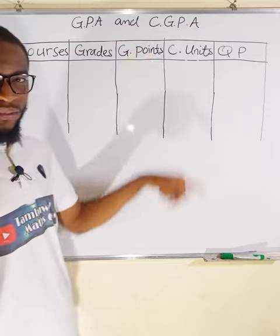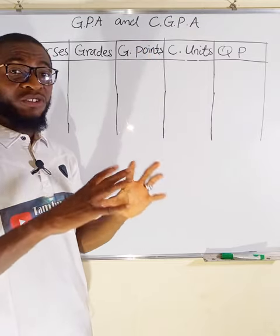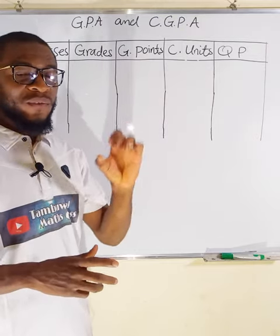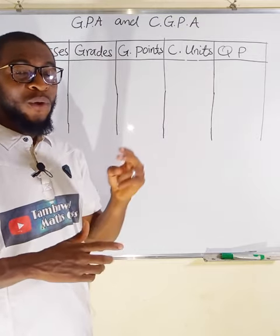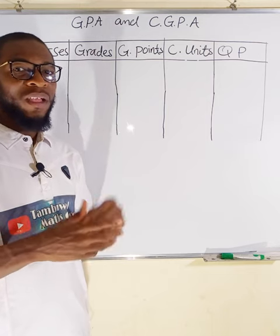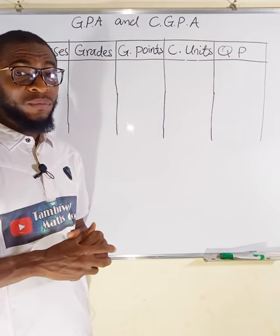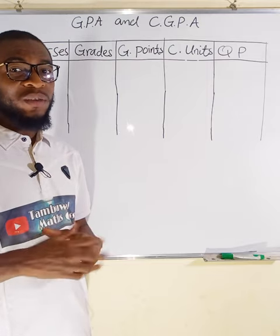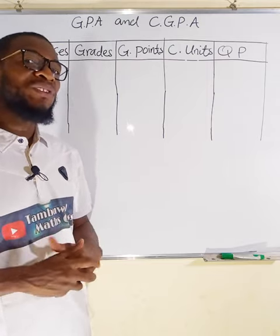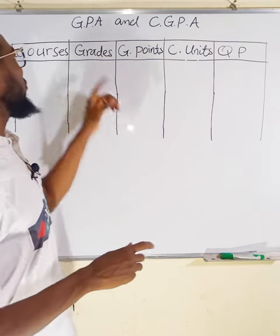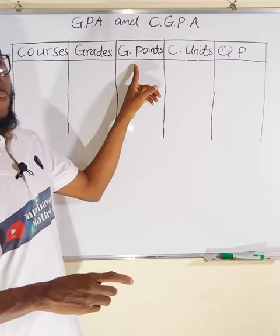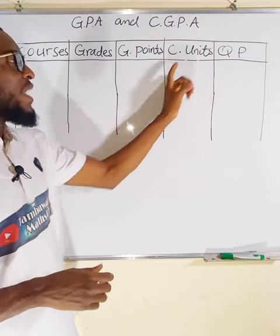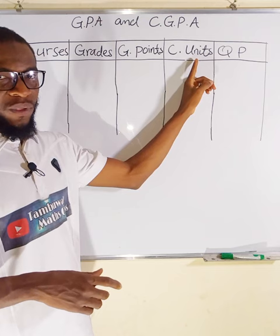We have grade points. According to Nigerian colleges and universities, 5 represents A, 4 represents B, 3 represents C, 2 represents D, 1 represents E, and 0 represents F. So if you scored A, you write 5 here in that order. We also have credit units.